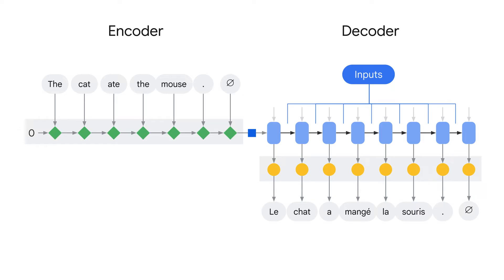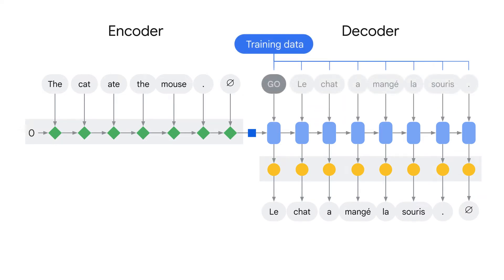But then how do you produce this dataset? In the case of the encoder-decoder architecture, this is a bit more complicated than for typical predictive models. First, you need a collection of input and output texts. In the case of translation, that would be sentence pairs, where one sentence is in the source language while the other is the translation. You'll feed the source language sentence to the encoder, and then compute the error between what the decoder generates and the actual translation. However, there is a catch — the decoder also needs its own input at training time. You'll need to give the decoder the correct previous translated token as input to generate the next token, rather than what the decoder has generated so far.